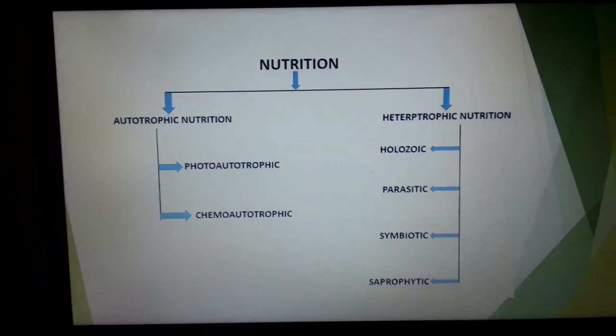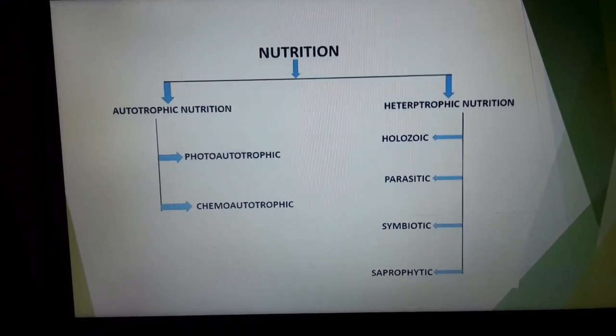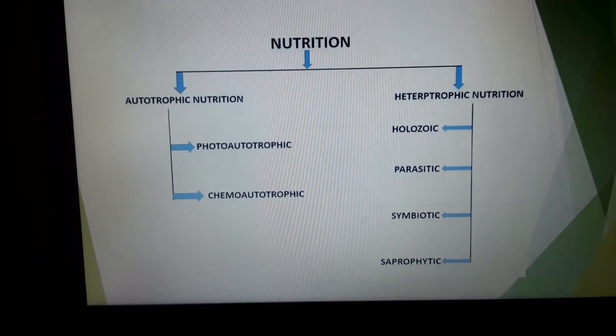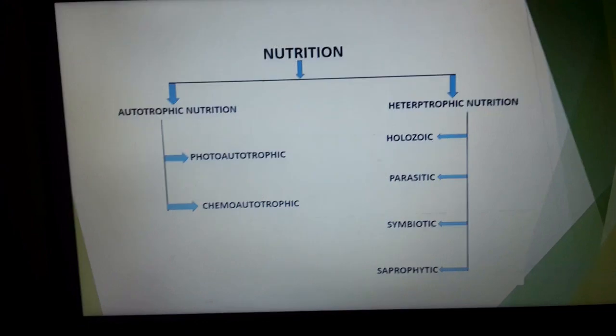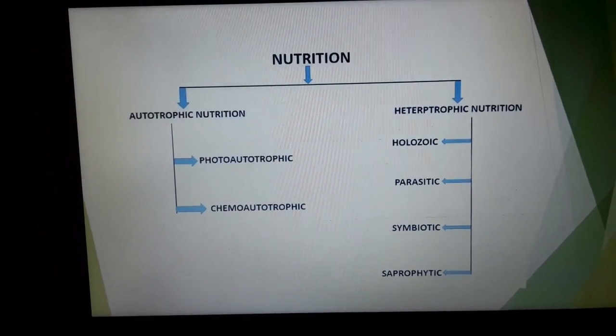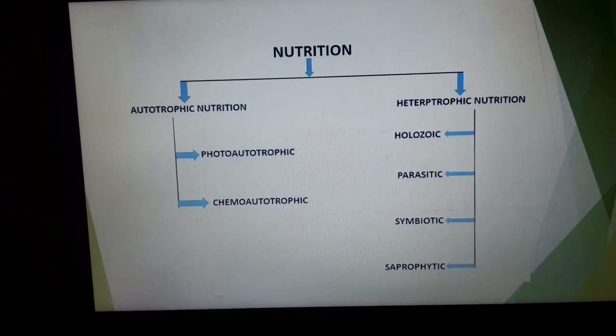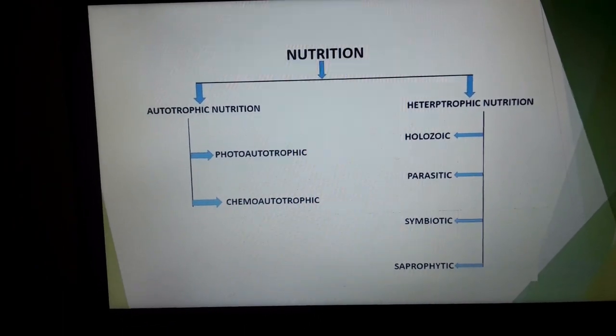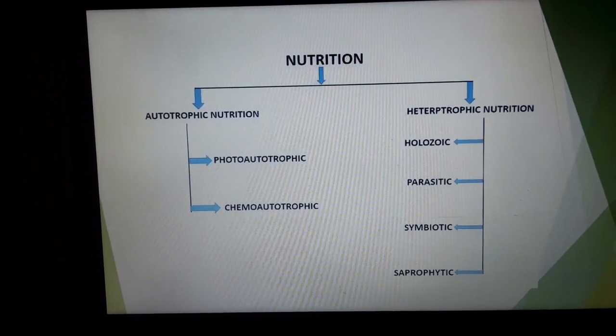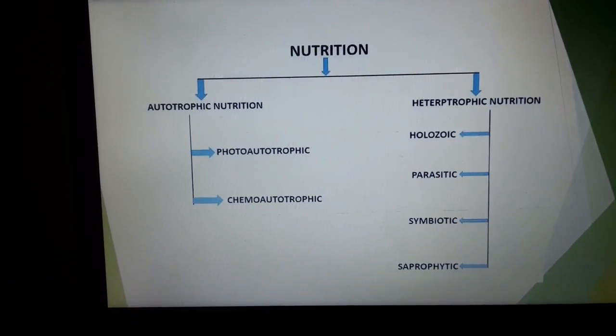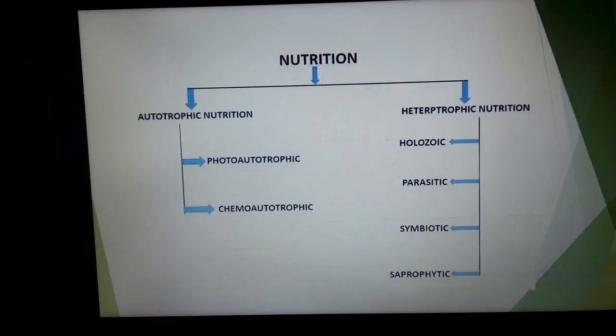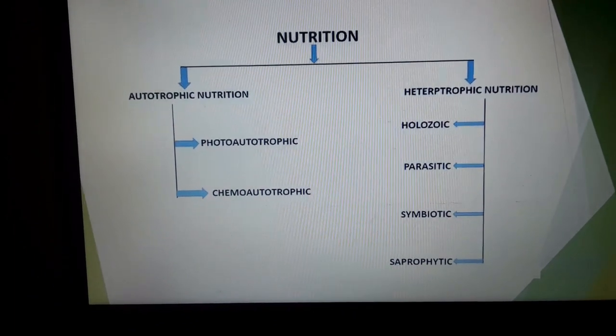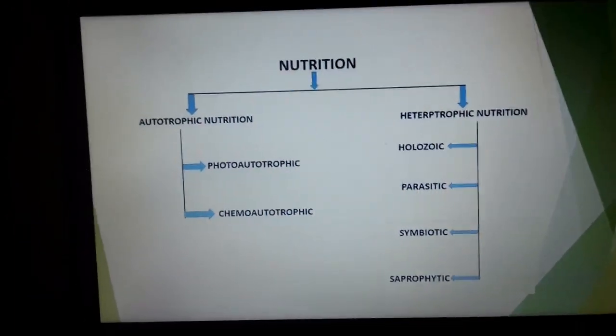If they are heterotrophic means dependent on the phototrophic nutrition, it can be holosuic like human beings or amoeba also. Parasitic like host parasite interaction. Symbiotic like dependent on each other or saprophytic means they are dependent on the dead and decaying components. This particular video specially for the autotrophic nutrition and the photosynthesis. So, I am focusing there most.